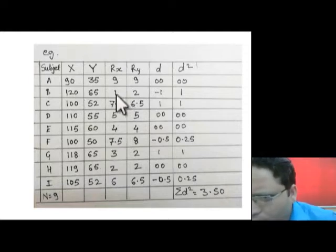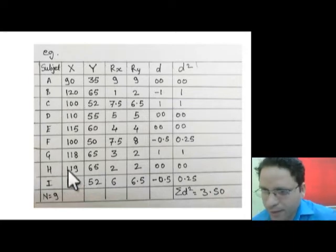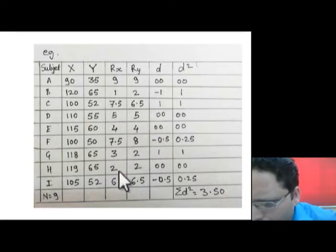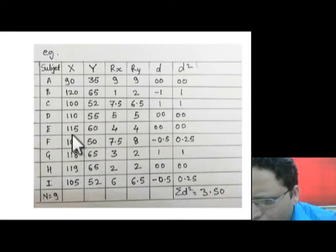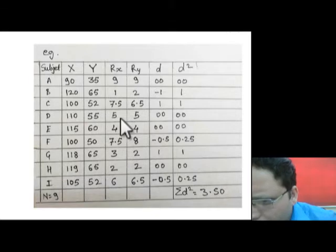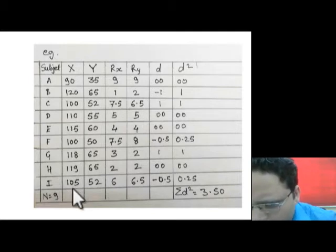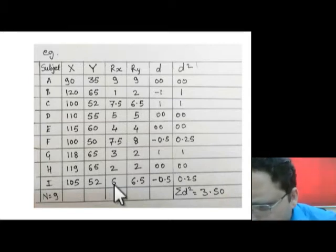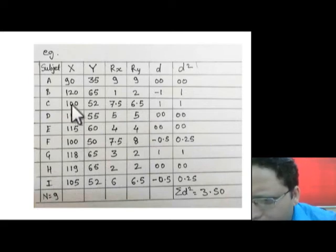After 120, the next highest number is 119, so we give it rank 2. After that, 118 gets rank 3, then 115 gets rank 4, 110 gets rank 5. After 110, the next highest number is 105, which gets rank 6. After that, the highest number is 100 — but 100 appears twice.